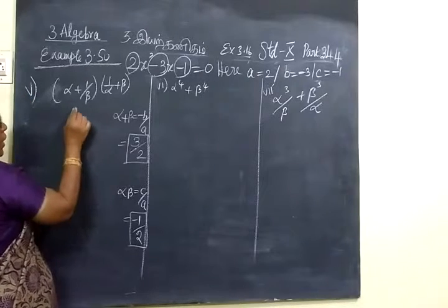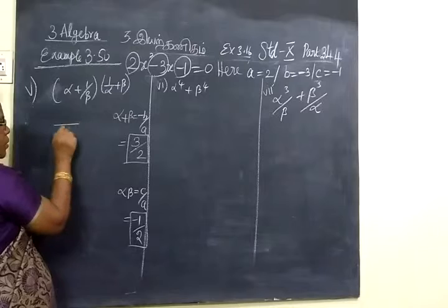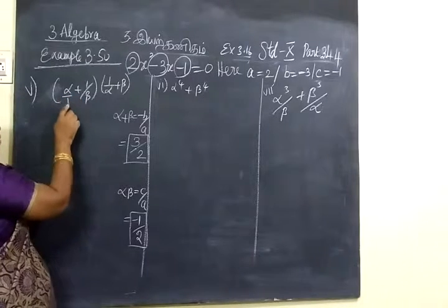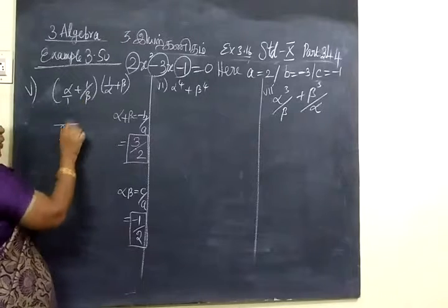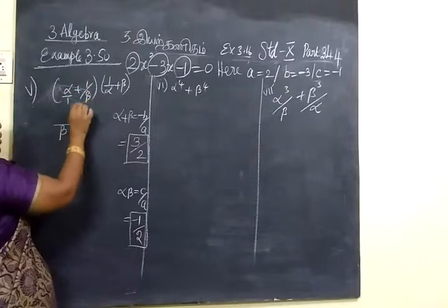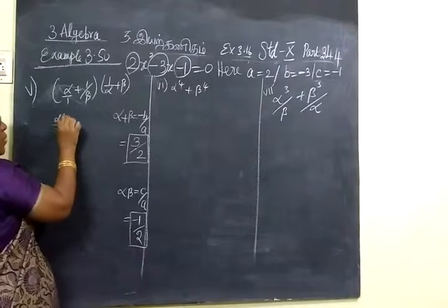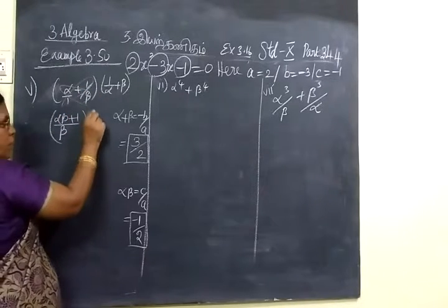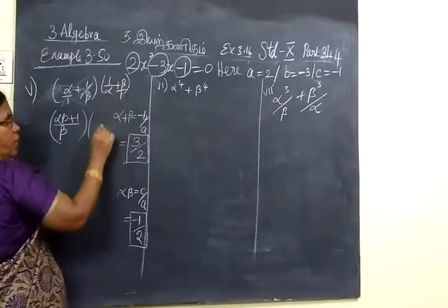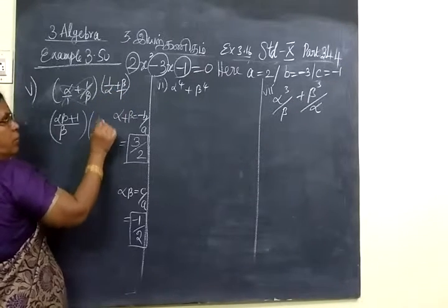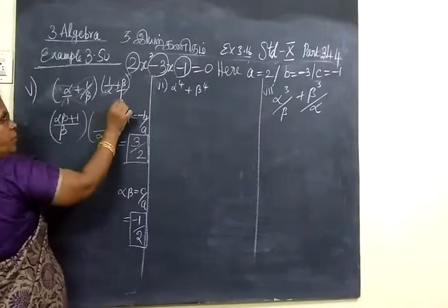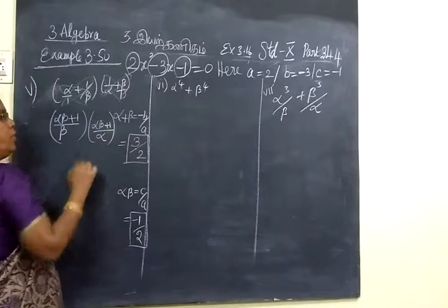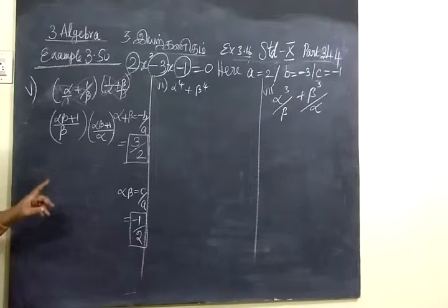Now take the LCM for this expression. The LCM is beta, since the denominators are 1 and beta. So 1 into beta gives beta. Now cross multiply: alpha into beta gives alpha beta, and 1 into 1 gives 1. Similarly here, LCM is alpha, cross multiply: 1 into 1 gives 1, alpha into beta gives alpha beta. So the numerator becomes alpha beta plus 1.